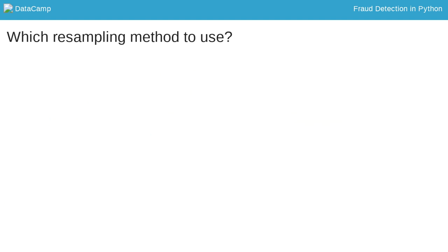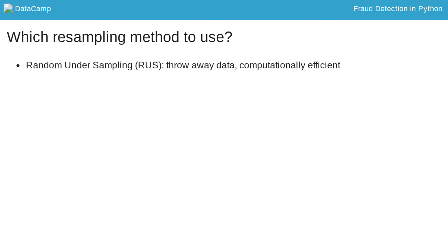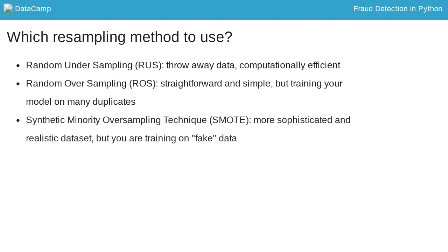You might wonder which one of these methods is the best. Well, it depends very much on the situation. If you have very large amounts of data and also many fraud cases, you might find it computationally easier to undersample rather than to increase data even more. But in most cases, throwing away data is not desirable. When it comes to oversampling, SMOTE is more sophisticated as it does not duplicate data. But this only works well if your fraud cases are quite similar to each other. If fraud is spread out over your data and not very distinct, using nearest neighbors to create more fraud cases introduces a bit of noise in the data, as the nearest neighbors might not necessarily be fraud cases.